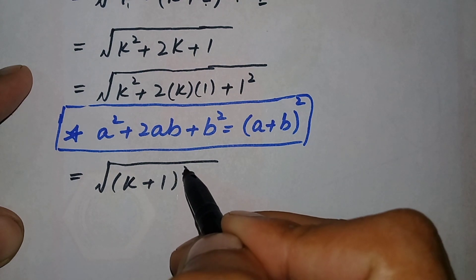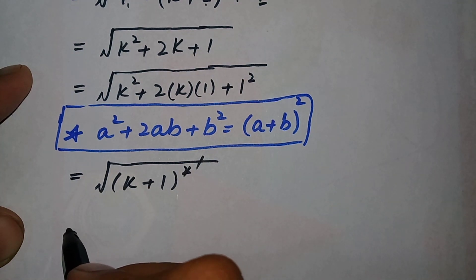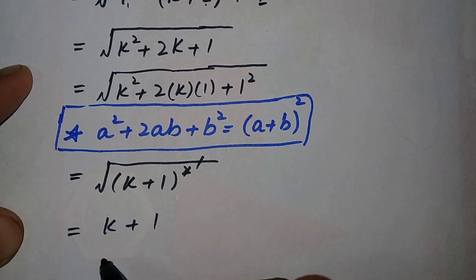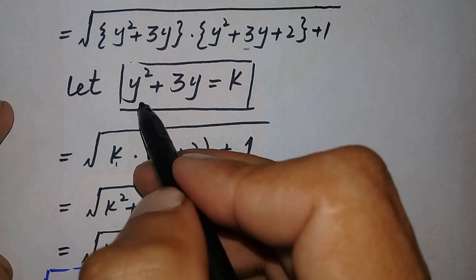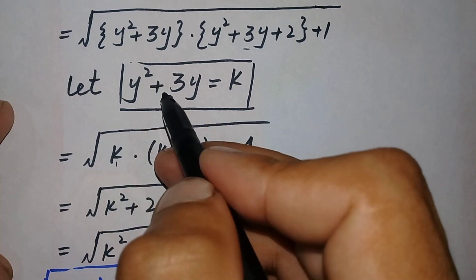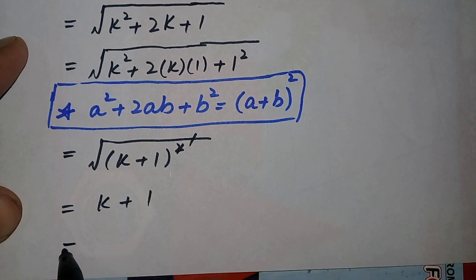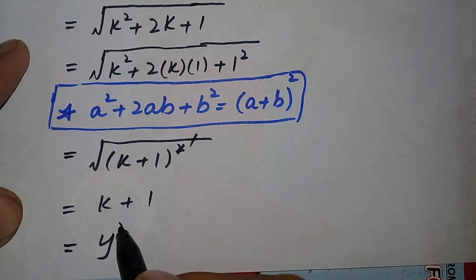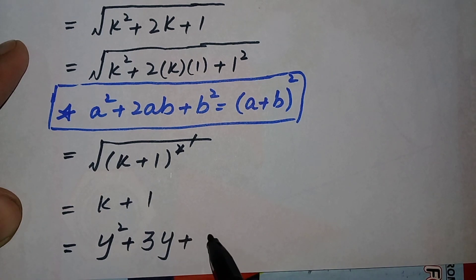Applying the identity, the expression becomes the square root of (k plus 1) whole squared. The square root and the square cancel, leaving k plus 1. Since k equals y squared plus 3y, the result is y squared plus 3y plus 1.